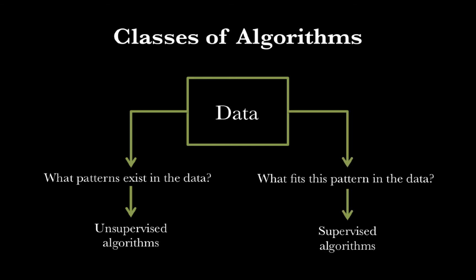A second type of algorithm is called a supervised algorithm, and these algorithms are really good at extracting detailed signals from the data. These algorithms do require that we impose some knowledge on the data — so we say, I care about being able to separate these genes from these other genes. And once we structure the problem in that way, the algorithm can ask what patterns in the data do a good job of separating the first set of genes from the second set of genes.